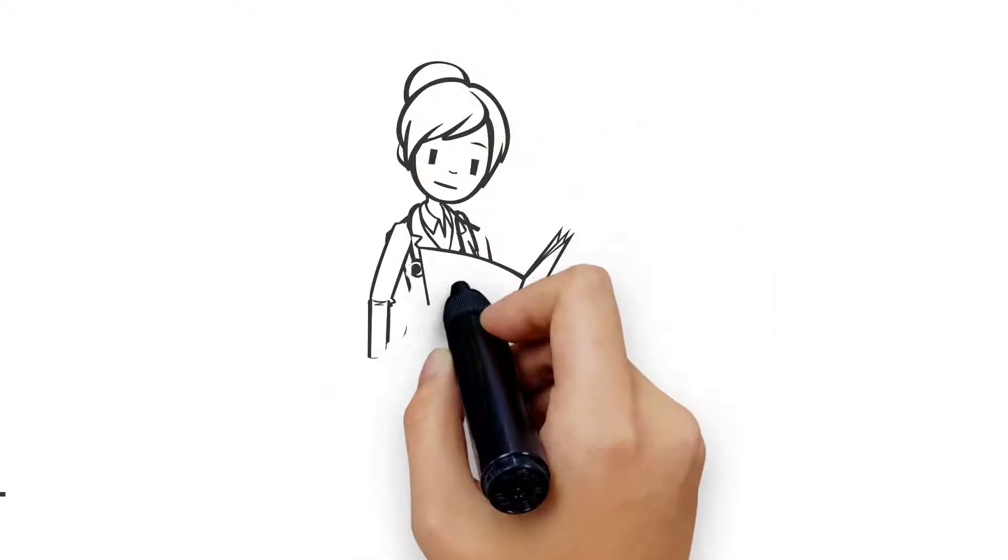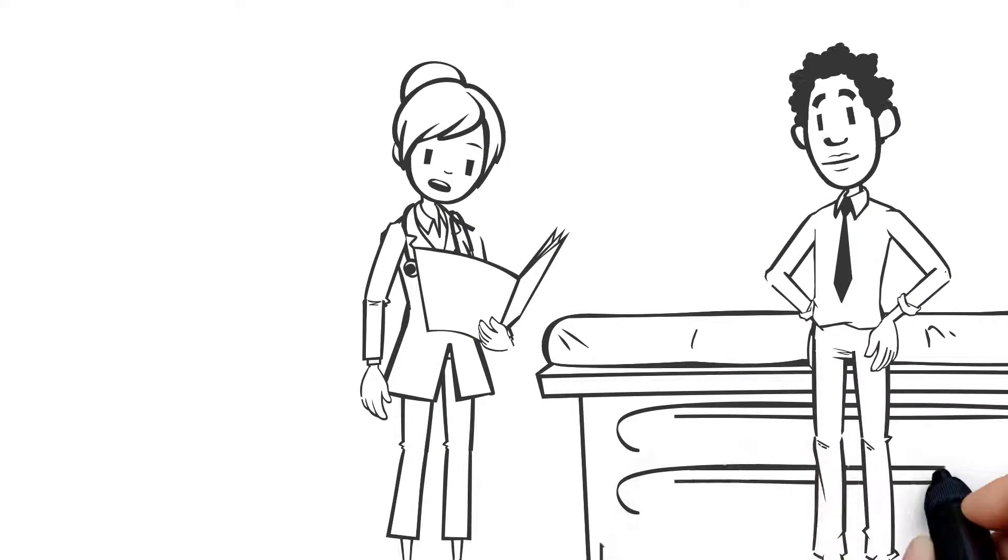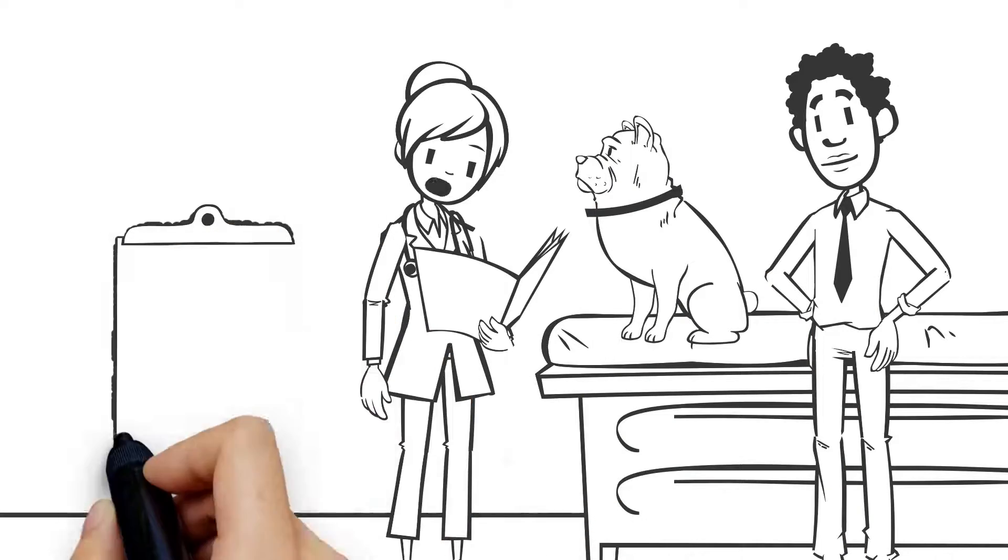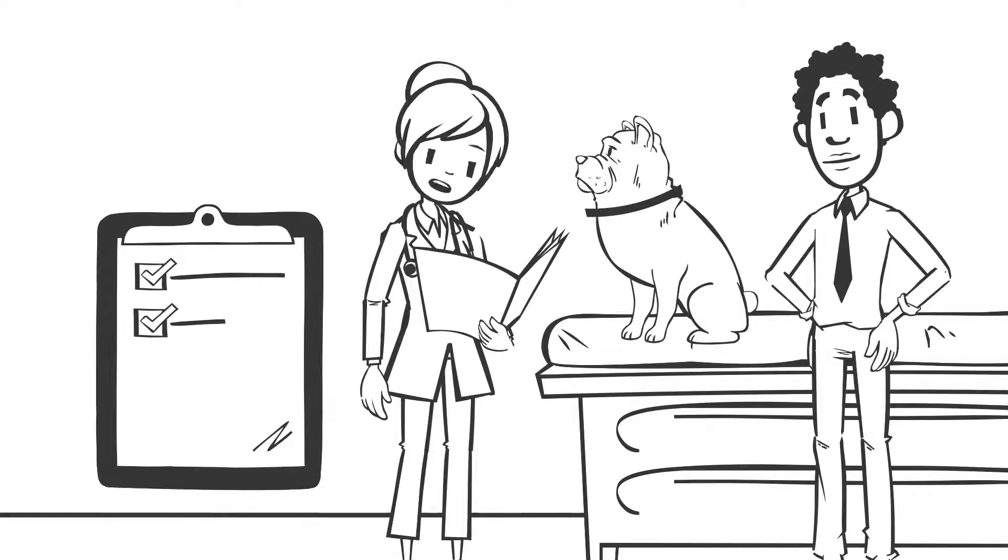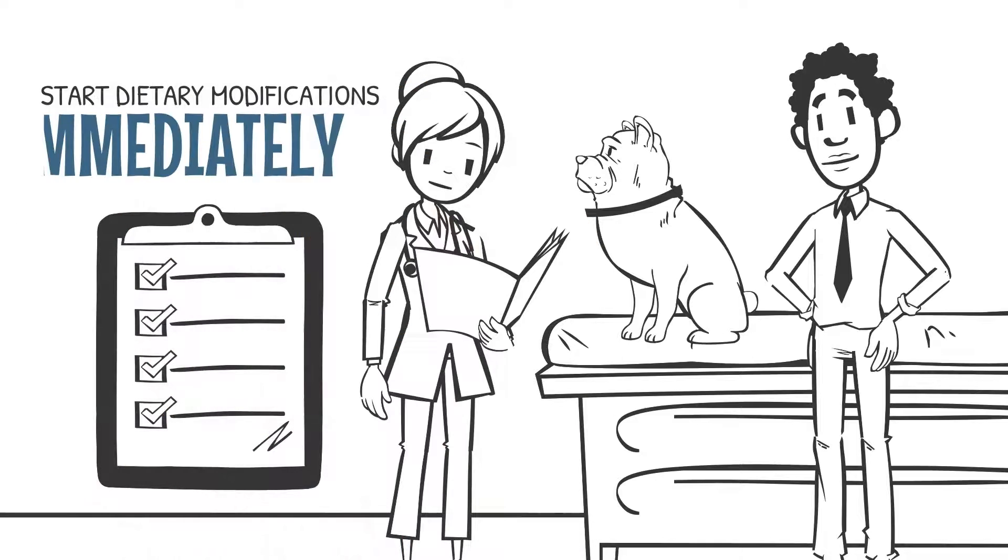Review the entire booklet with the pet parent, including the food list and treatment options. Check and highlight approved foods available in clinic to start pets on their dietary modifications immediately.